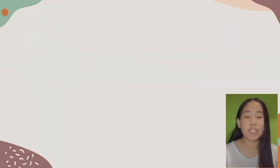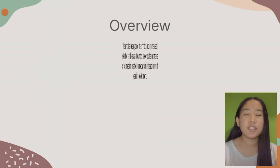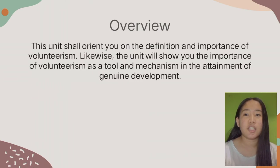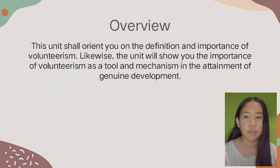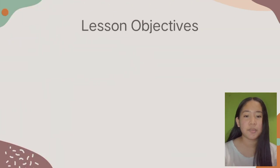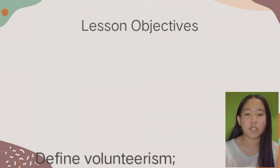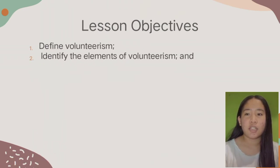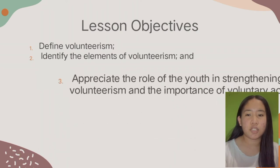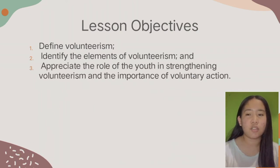But before we begin, here's the overview and lesson objectives of this lesson. This unit shall orient you on the definition and importance of Voluntarism. Likewise, the unit will show you the importance of Voluntarism as a tool and mechanism in the attainment of genuine development. After this lesson, we must define Voluntarism, identify the elements of Voluntarism, and appreciate the role of the youth in strengthening Voluntarism and the importance of Voluntary Action.